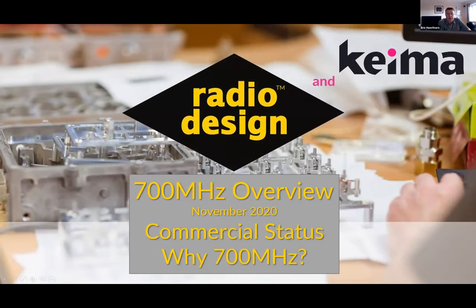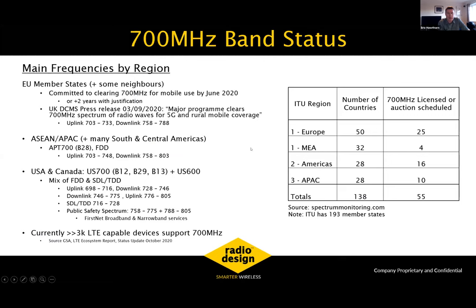I'm going to give a brief overview of the status of 700 megahertz and why it's such an important band. Looking at EU member states and some close neighbors, there was a commitment to clearing 700 MHz for mobile use by June 2020 — or with an extension of two years with reasonable justification. As recently as September, the UK government announced that had been achieved, declaring spectrum for 5G and rural mobile coverage. It's a 30 megahertz FDD-paired band.